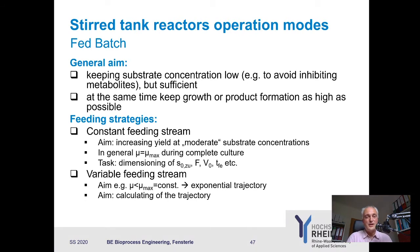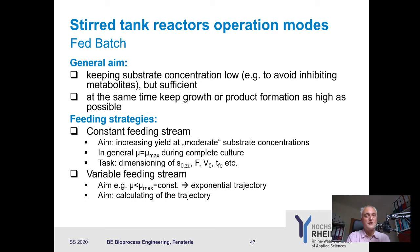Your feeding strategy depends on what you want. You have two basic options: either a constant feed stream or a variable one. For a constant feed stream — the simplest strategy — you would increase yield at moderate substrate concentrations, keeping substrate concentration lower compared to adding all substrate at the beginning. In a closed batch culture, the specific growth rate is always at the maximum during the culture.